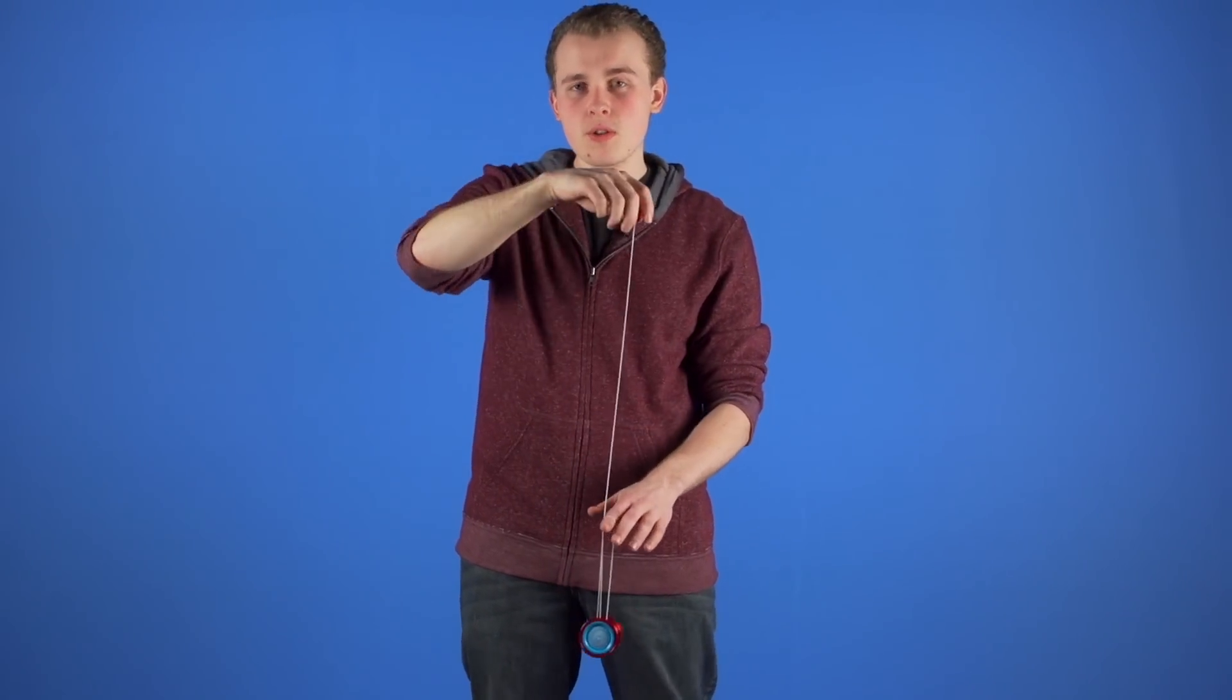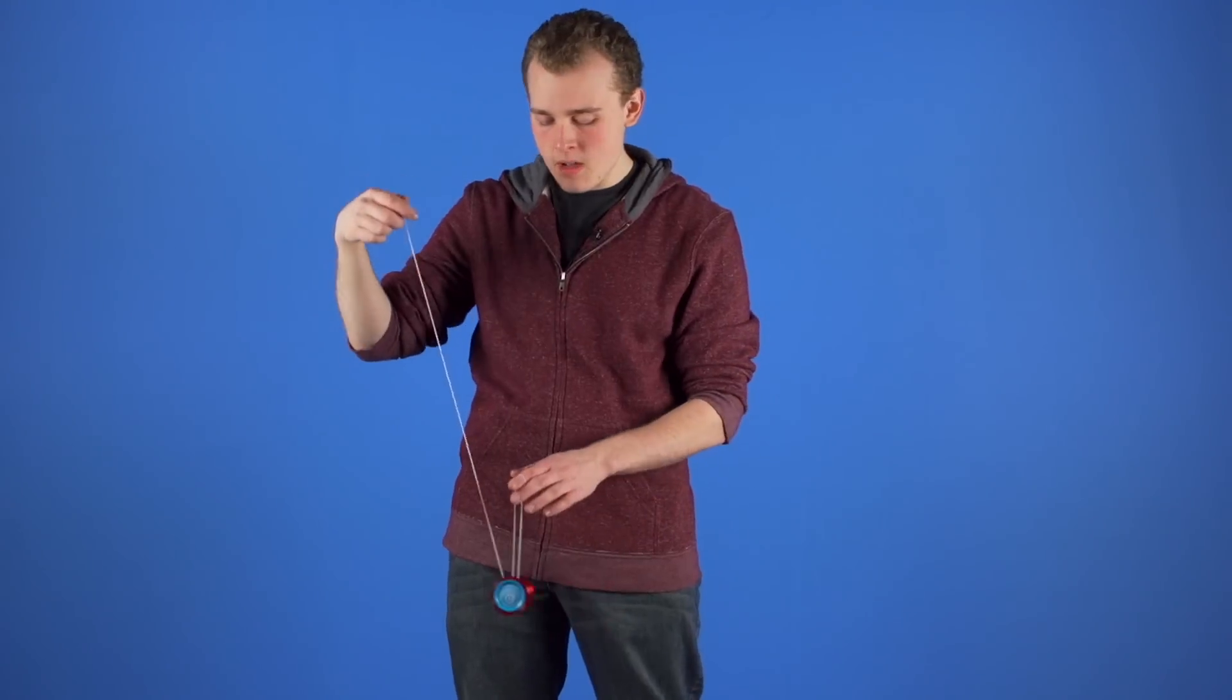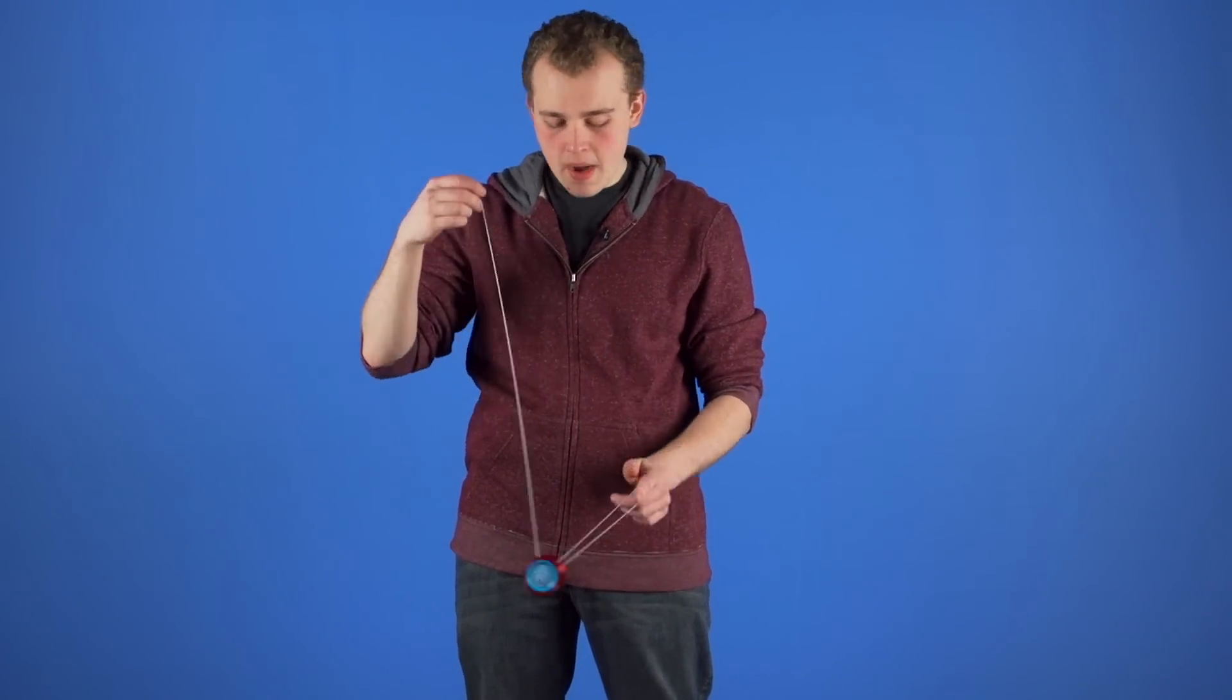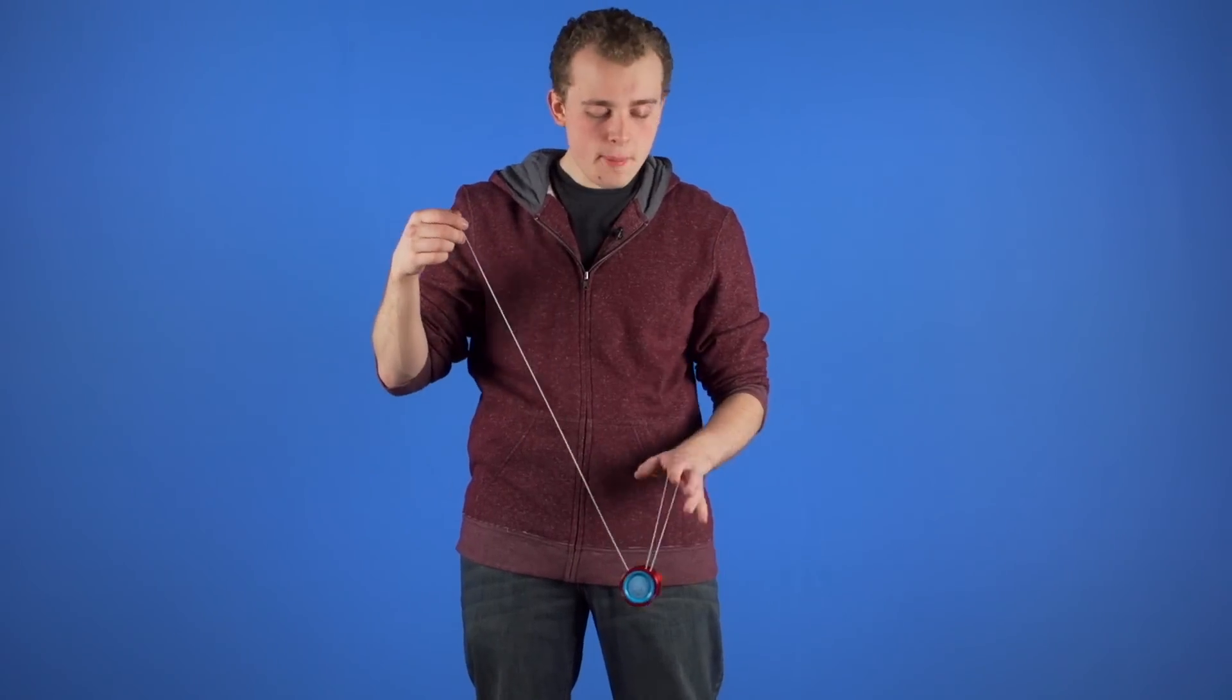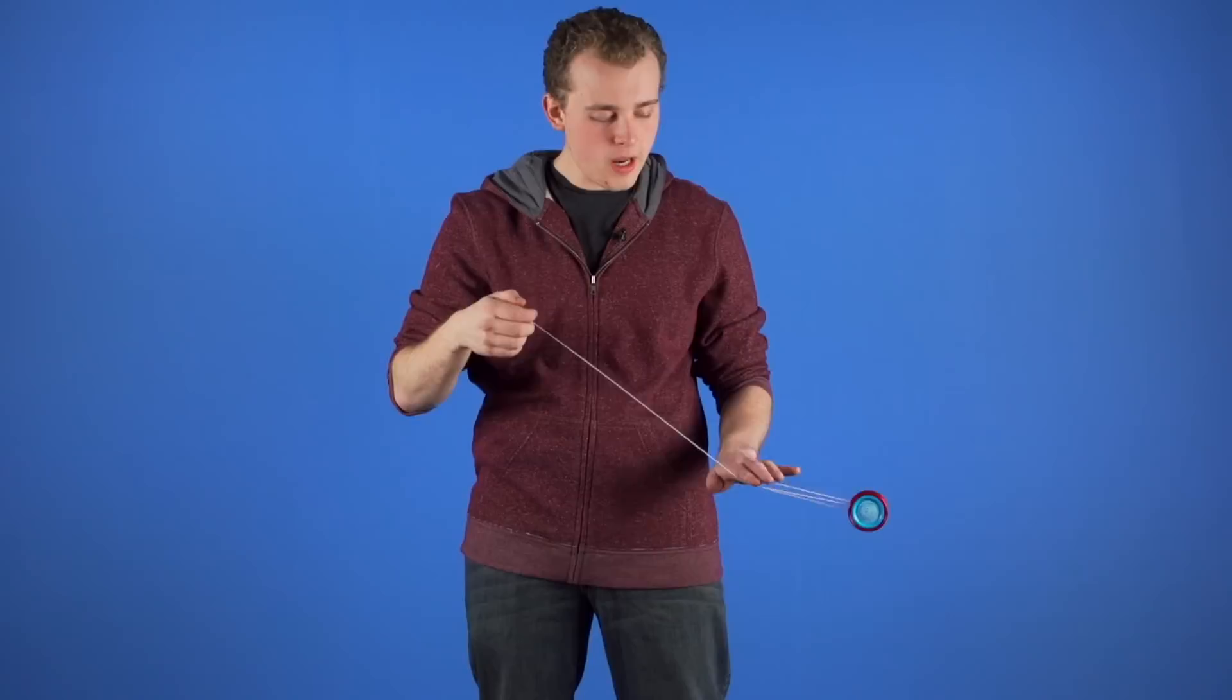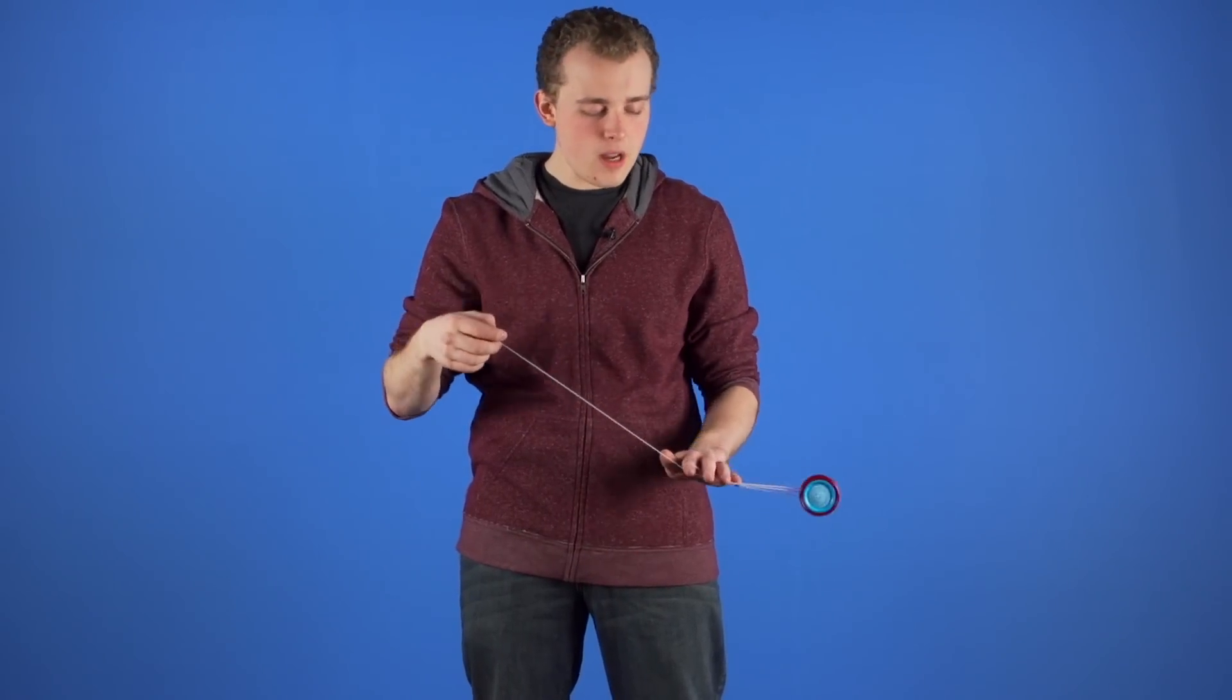Once you have your string proportions right, bring your throw hand back out and then you want to start swinging the yoyo back and forth side to side. As the yoyo is passing under your opposite hand and as it's moving in that direction, you want to let go of the counterweight and make a circle motion with your opposite hand.